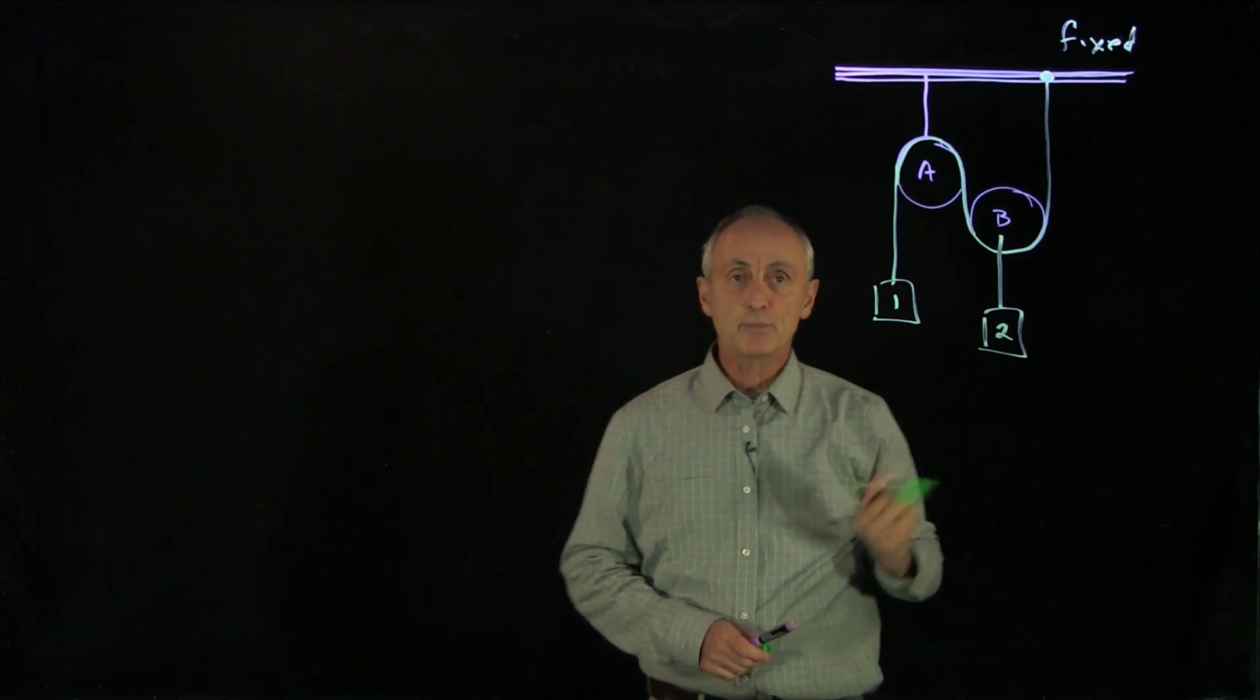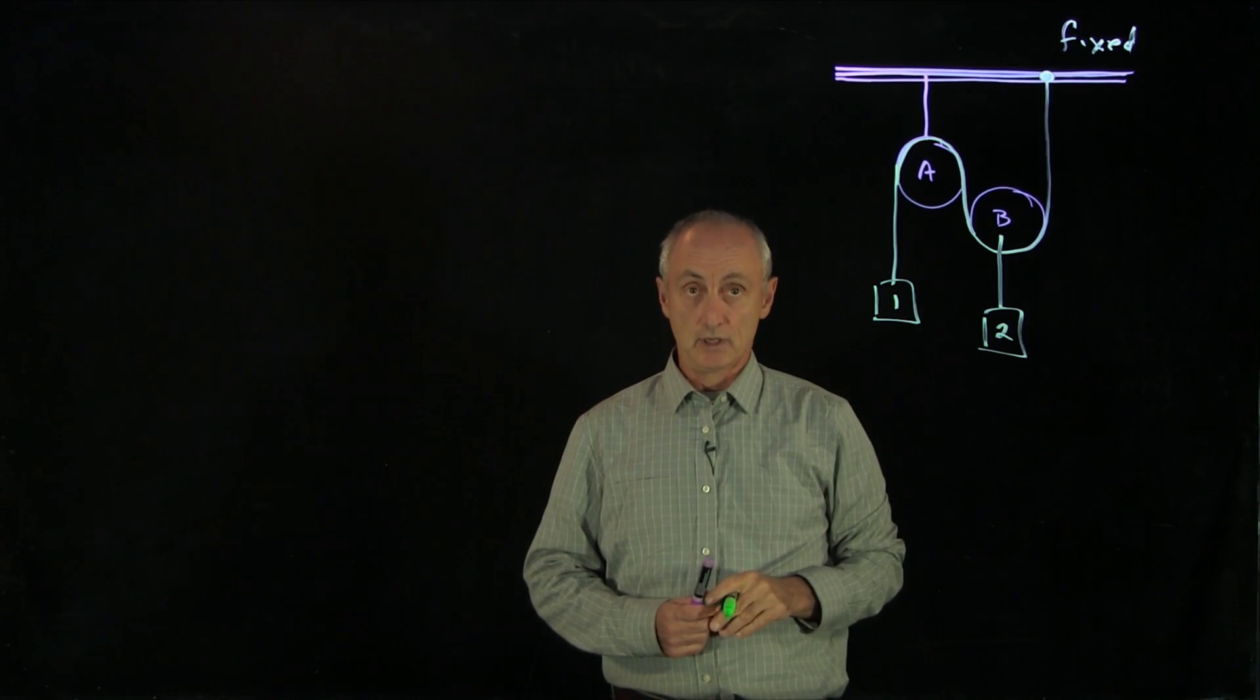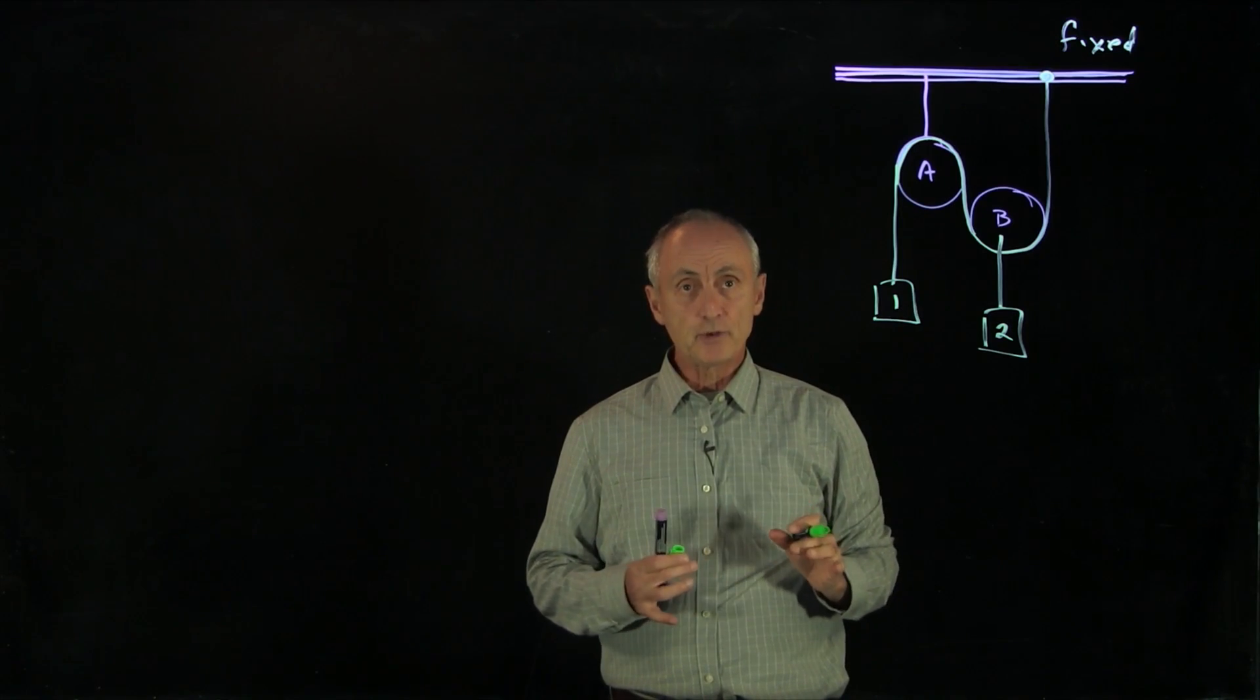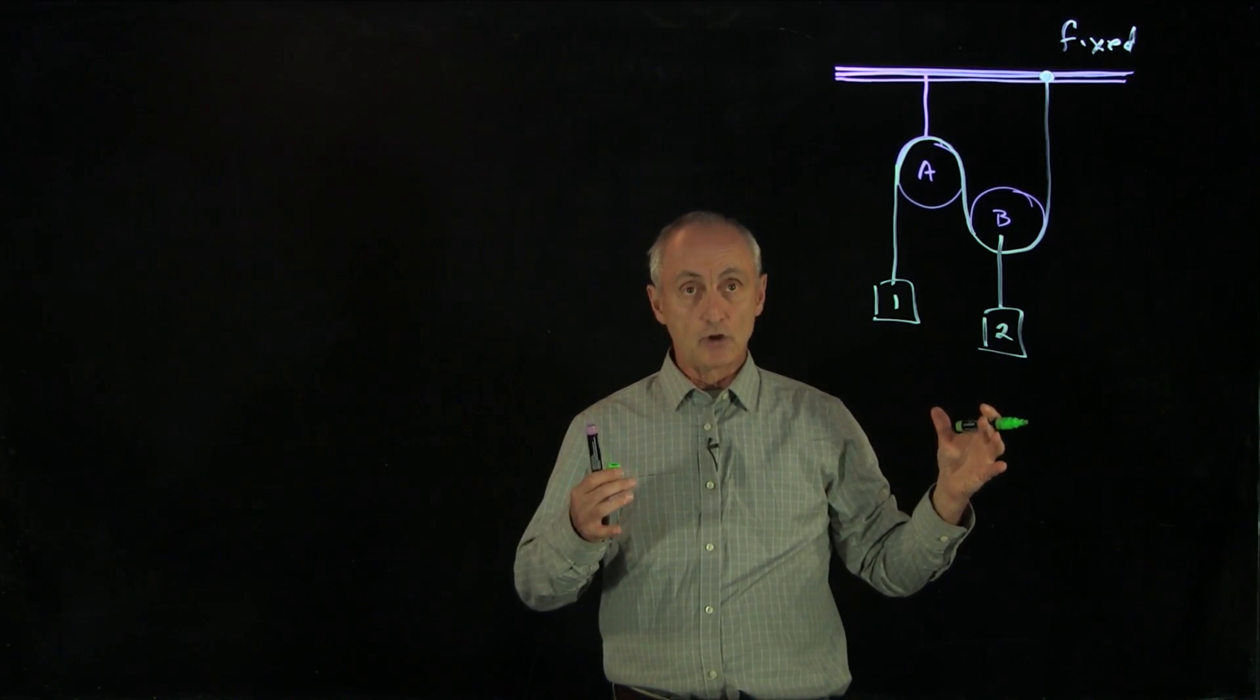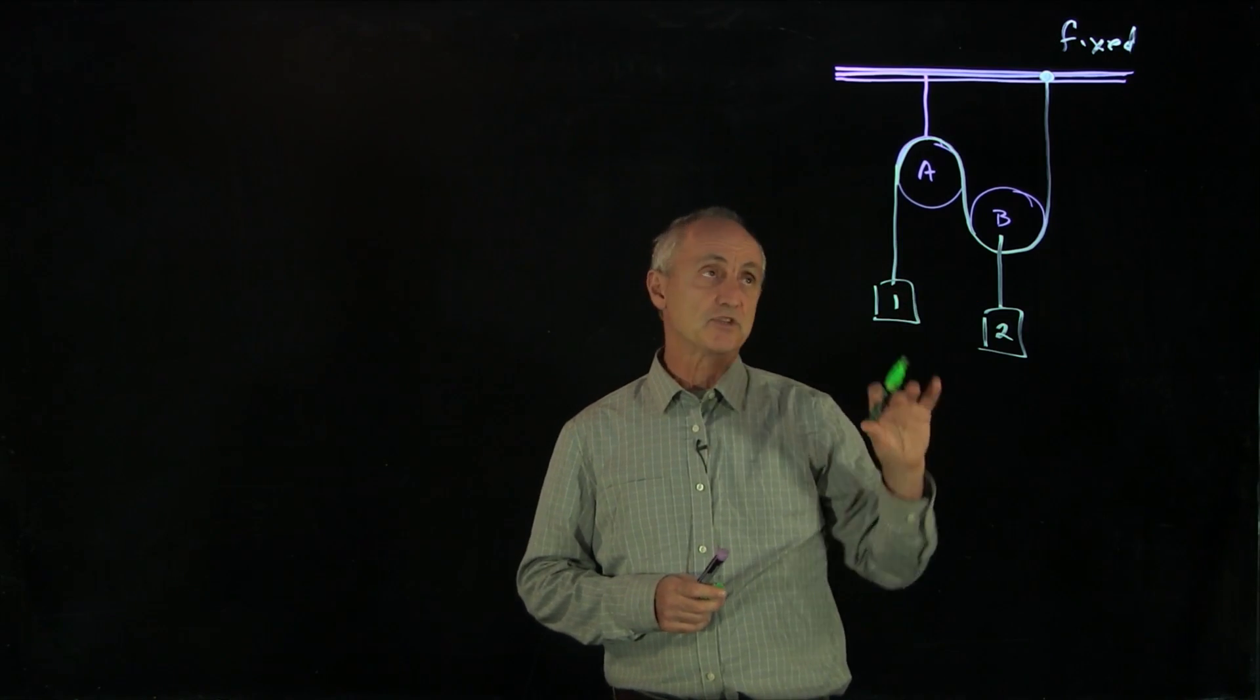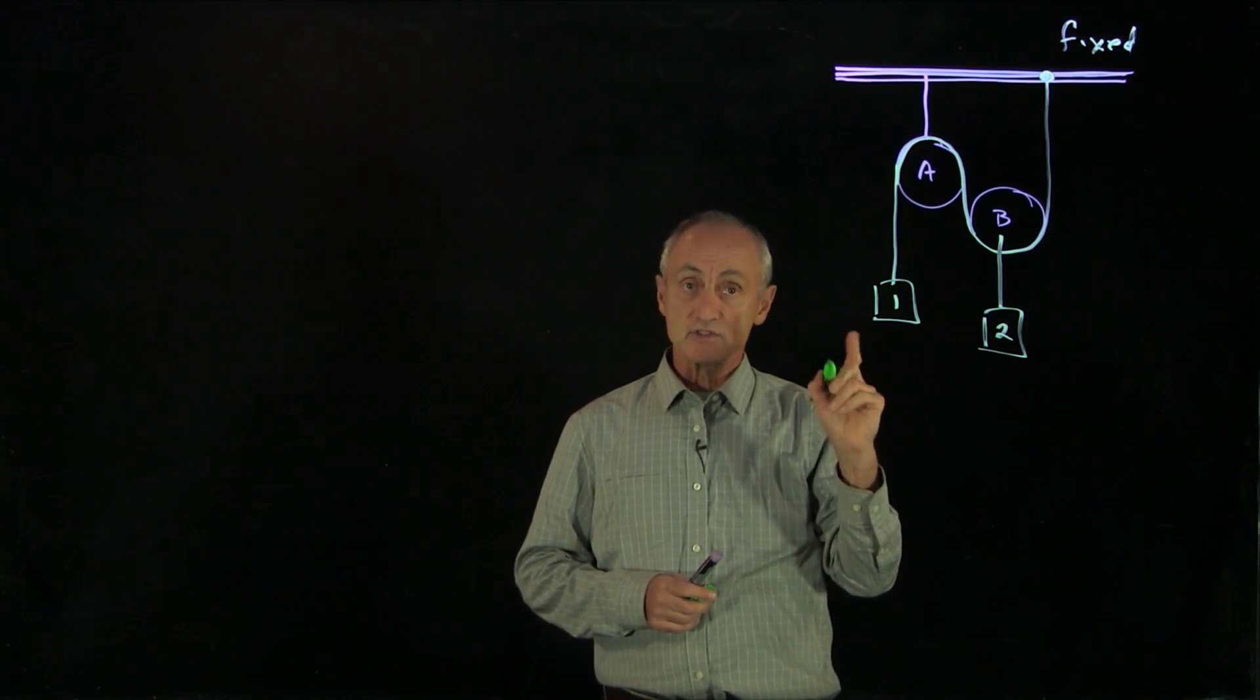Our goal in applying Newton's second law is to find the accelerations of objects 1 and 2. How do we approach this? Well, the first thing we have to do is decide what is the system that we'll apply it to. There's many different ways to choose a system. When we look at this problem, we'll have several different systems.